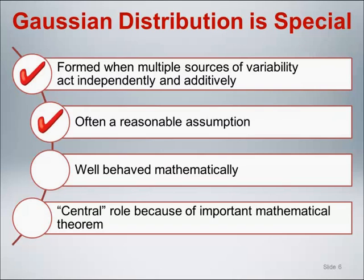Because scatter or error is often the result of many independent causes, assuming that the distribution will follow a Gaussian distribution is often a reasonable assumption to make for a variety of variables. The reasonableness of a Gaussian assumption is fortunate because the distribution is well behaved mathematically. If one can assume a Gaussian distribution, statistical calculations can be greatly simplified.